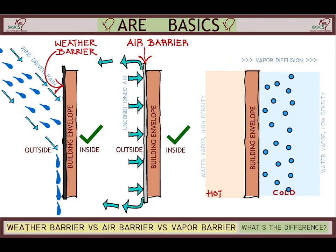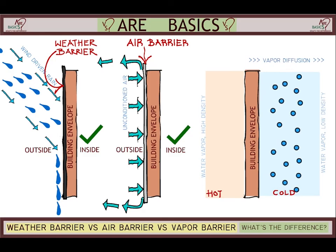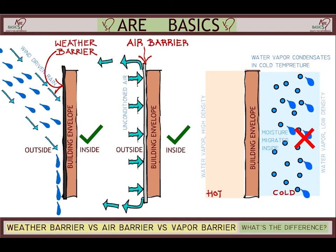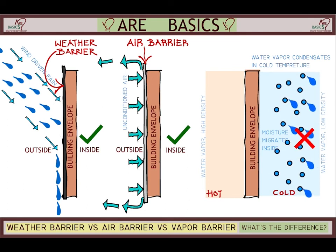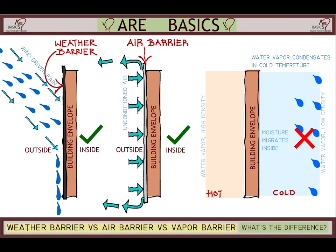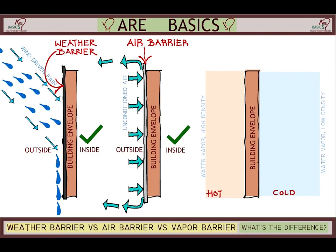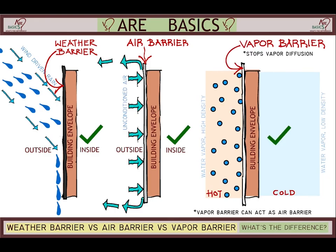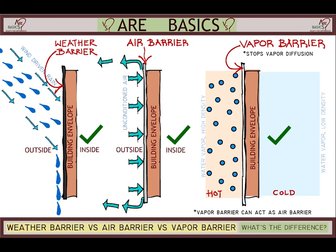As the water vapor migrates towards the colder area, it begins to convert into water droplets as a result of condensation. This condensation, when it takes place inside the building envelope and is unable to dry itself, causes issues such as rot and mold. The vapor barrier stops the vapor diffusion and hence stops the migration of moisture through the envelope.